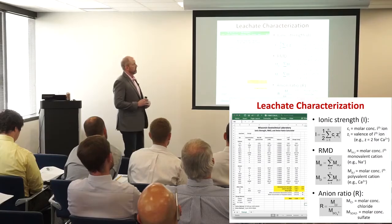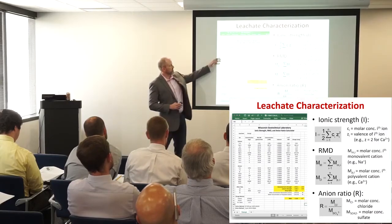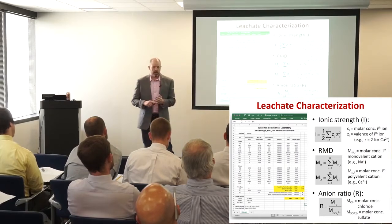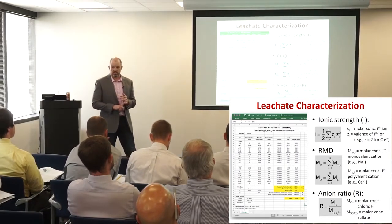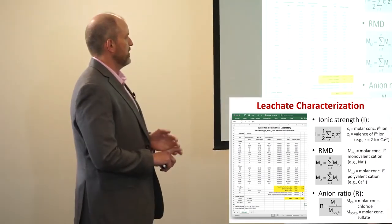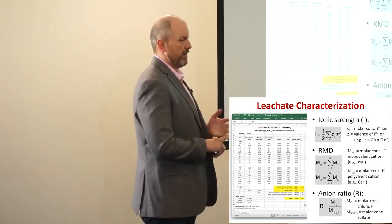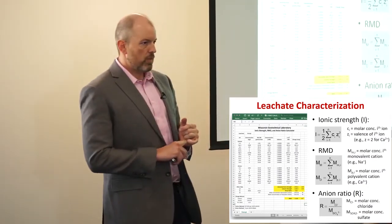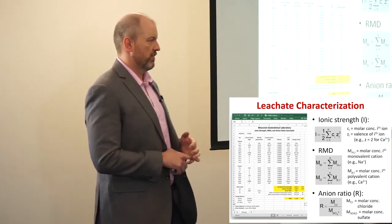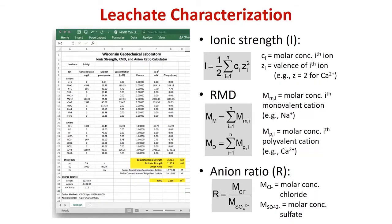Here we are. We've got our analytical results back, all in parts per million. We're going to sum it up and calculate the ionic strength — just how strong our leachate is. We're going to calculate the RMD, that ratio of monovalent to divalent cations. And we're going to calculate our anion ratio, which is the ratio of the chlorides to the sulfates. These numbers, combined with pH and electrical conductivity, are used by the manufacturer to select products that will solve the problem at that site.